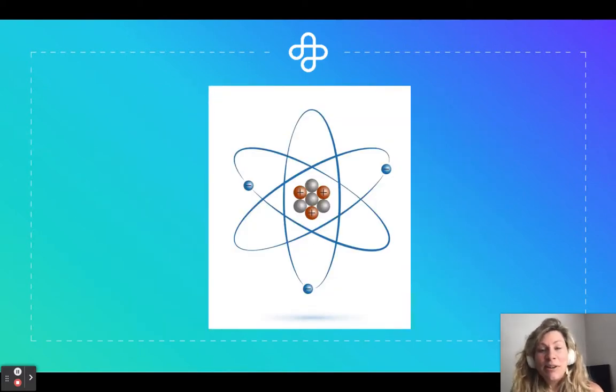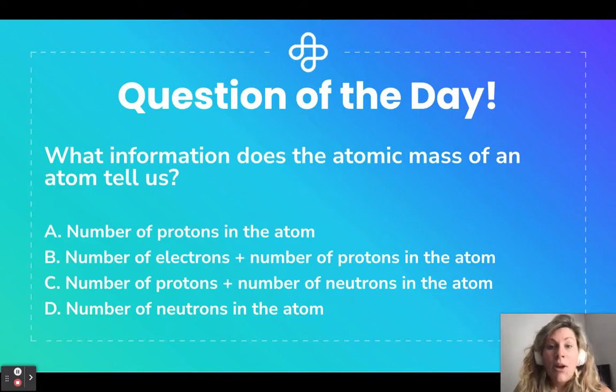Let's look at a few models of atoms to see if that can jog your memory. So here we see a common depiction of an atom. We have the nucleus in the middle, and then we have the cloud around the outside. On the inside where you see the plus, those are our protons, and the gray spheres are neutrons. Floating around on the outside are the electrons of the atom.